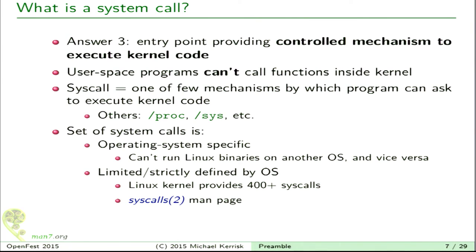On Linux there are about 400 system calls. They're all listed in one man page called syscalls. What happens when we make a system call? Usually you don't call a system call directly. What you usually do is call a wrapper function inside a C library. That's why system calls look like normal functions, even though underneath they're not.